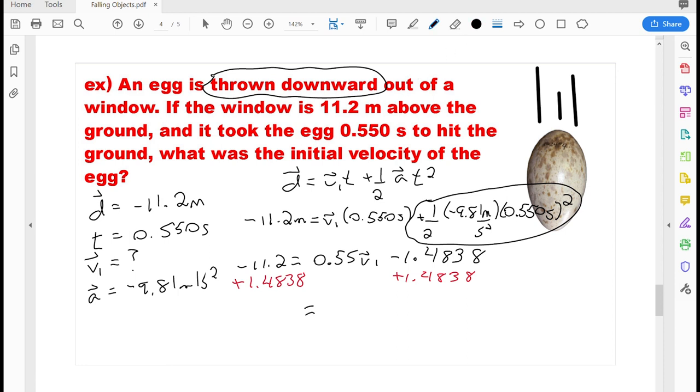Okay, let's see what we get. So that gives me negative 9.7162, and that equals 0.55 times the unknown variable VI. One more step and we're done. I'm going to divide both sides by negative 0.55, and see what we end up with. And I end up getting, for my initial velocity, a negative number. Negative 17.7 meters per second.